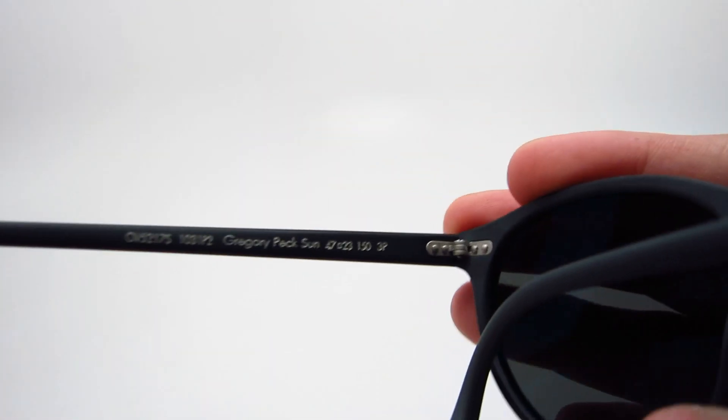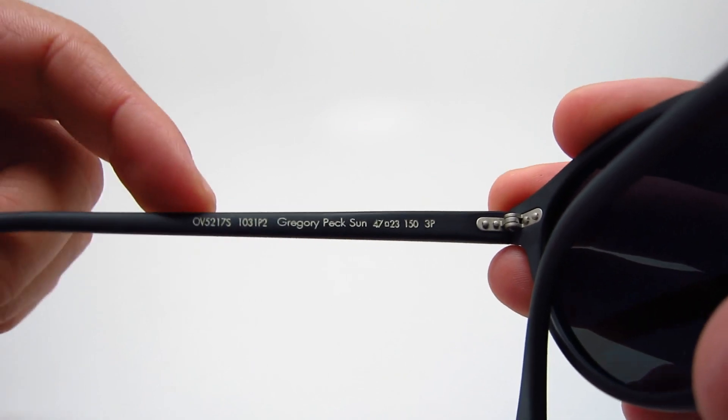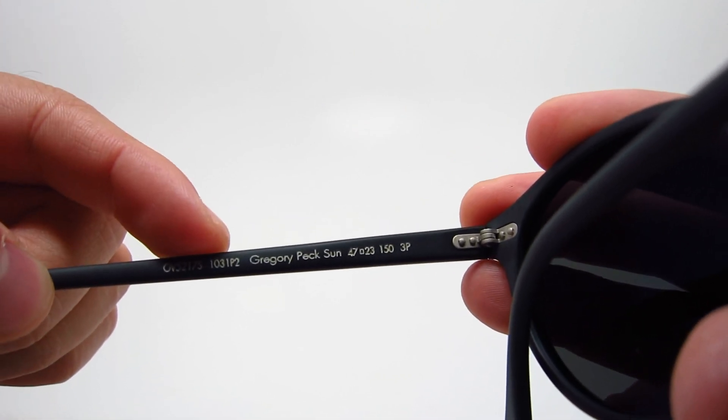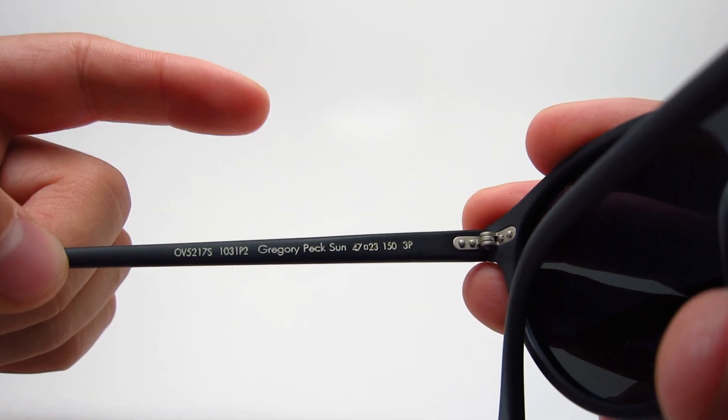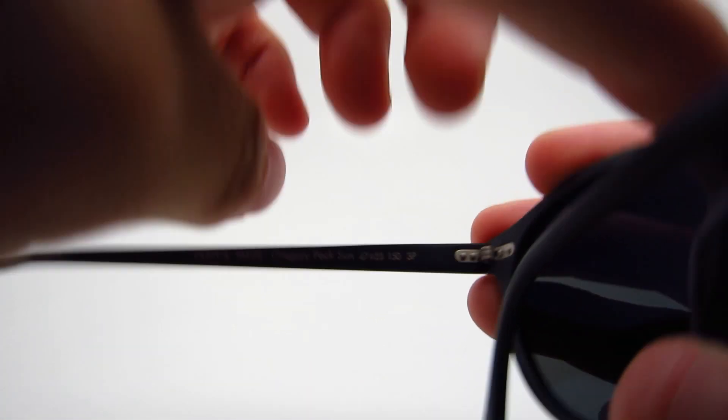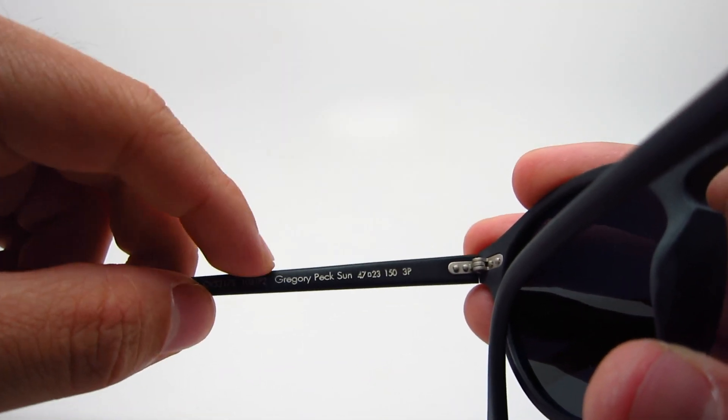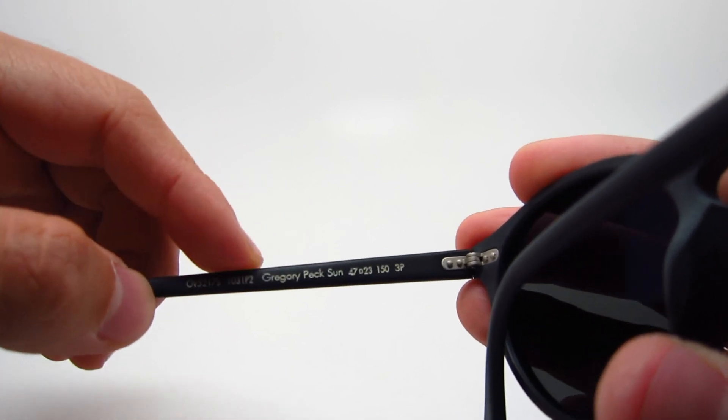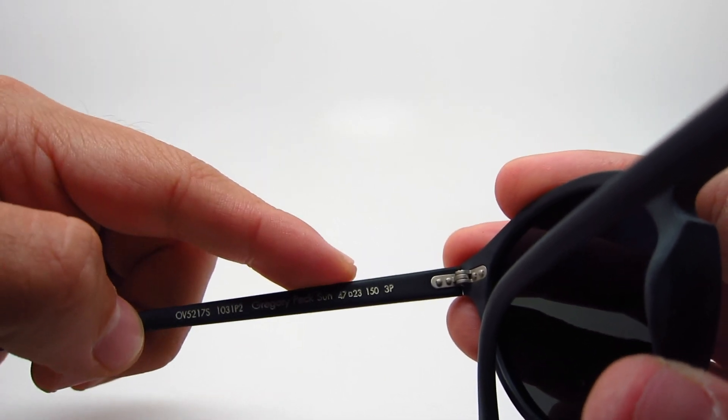Let me show you the insert. Oliver Peoples 5217S, color code 1031. With the color codes, the first four numbers, 1031, is the frame color, and the P2, the last two characters, is the lens color. It says Gregory Peck Sun.